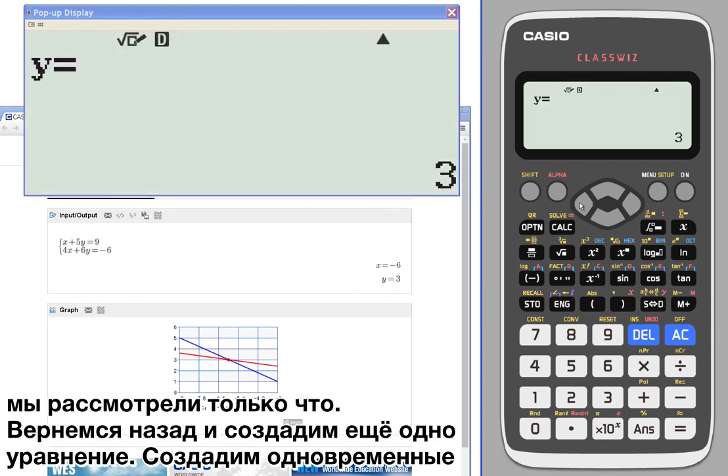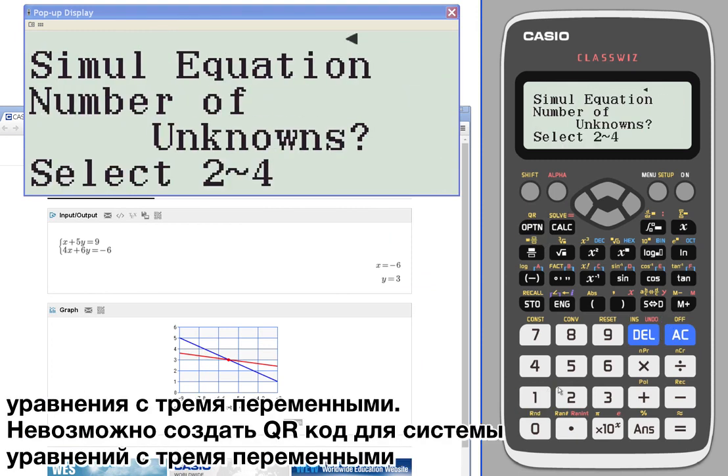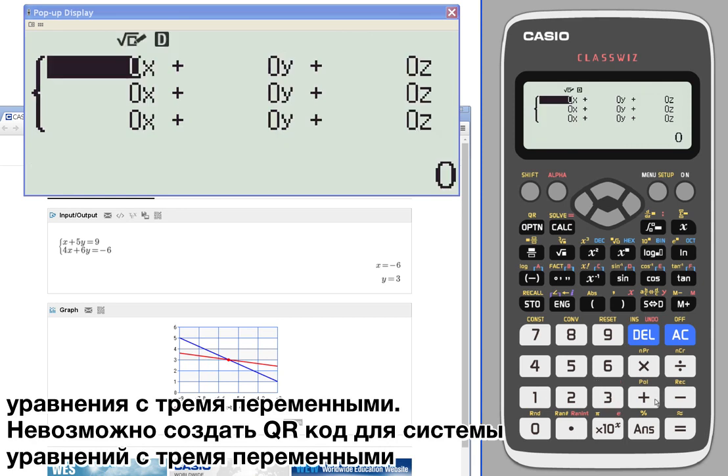Let's go back and create another equation. We'll do another simultaneous equation. Let's go with three variables this time.